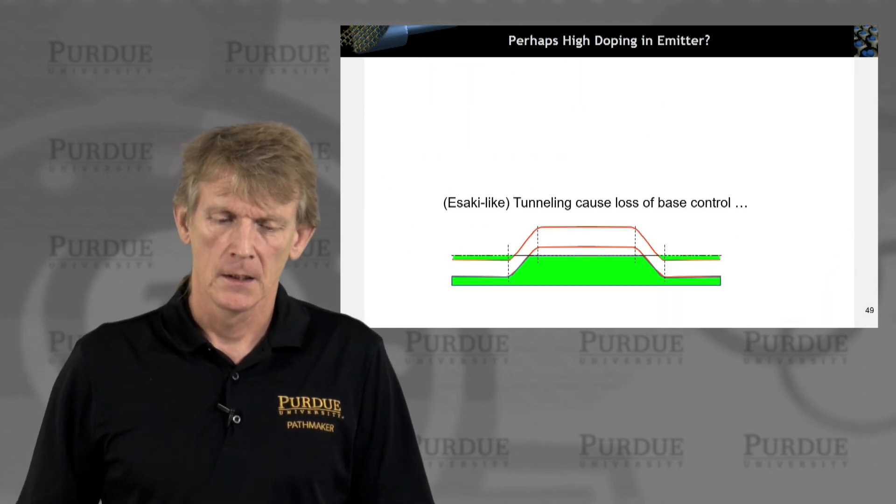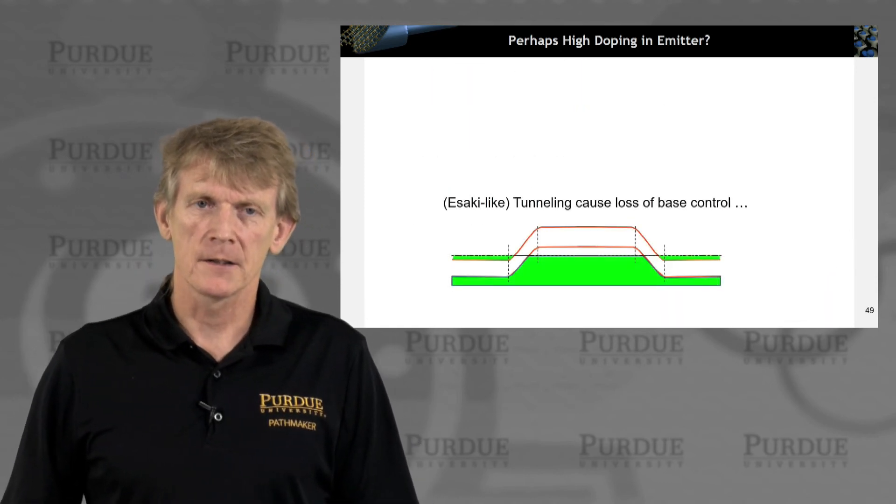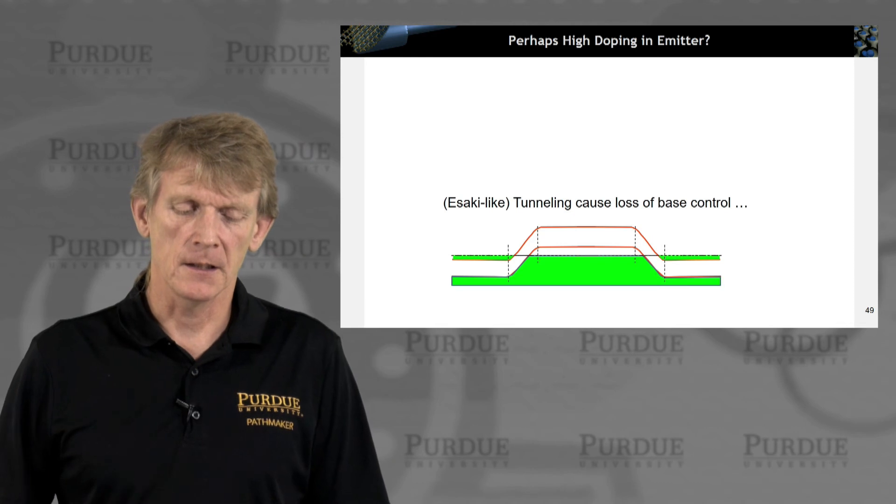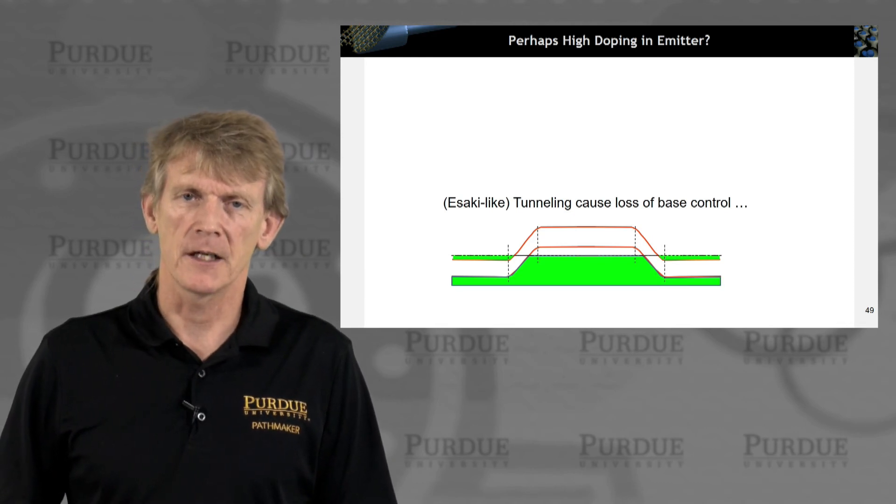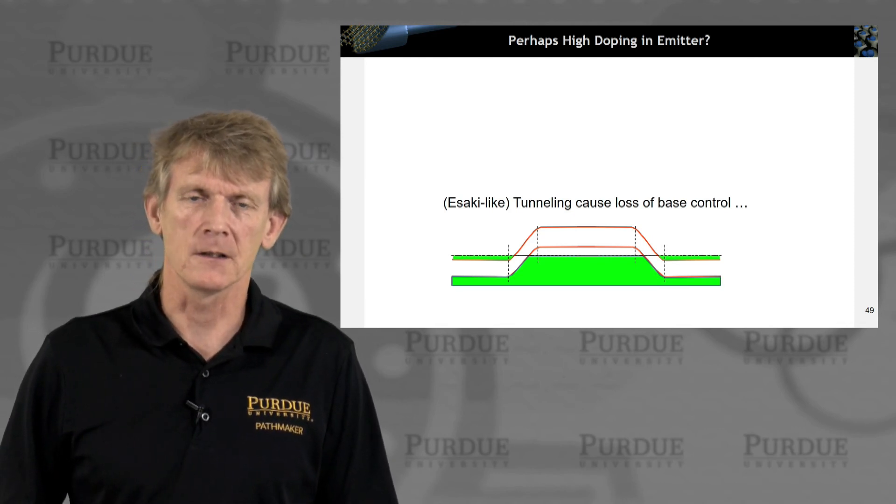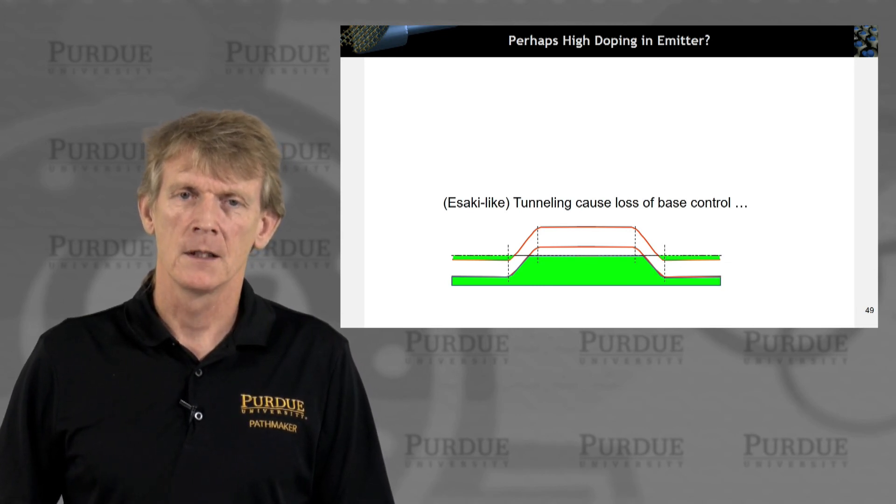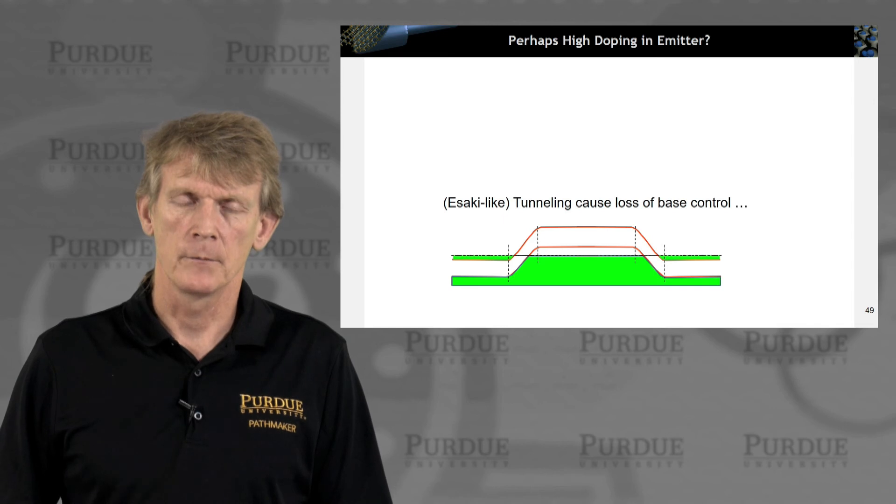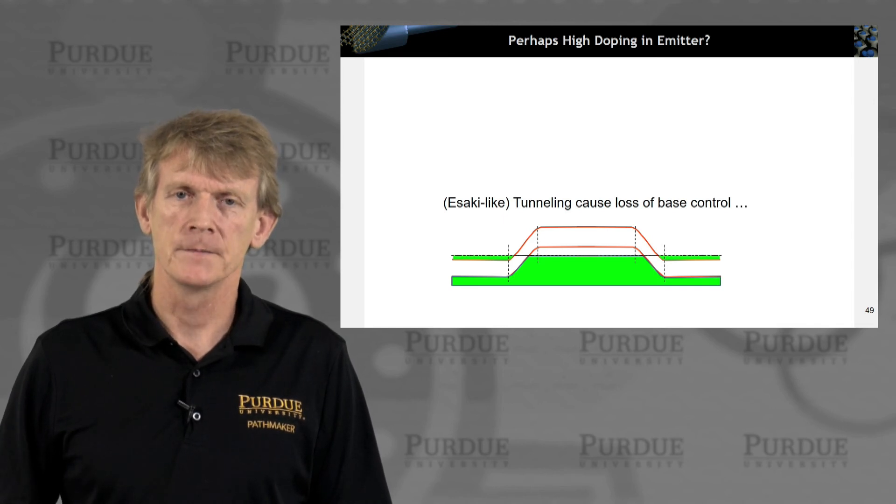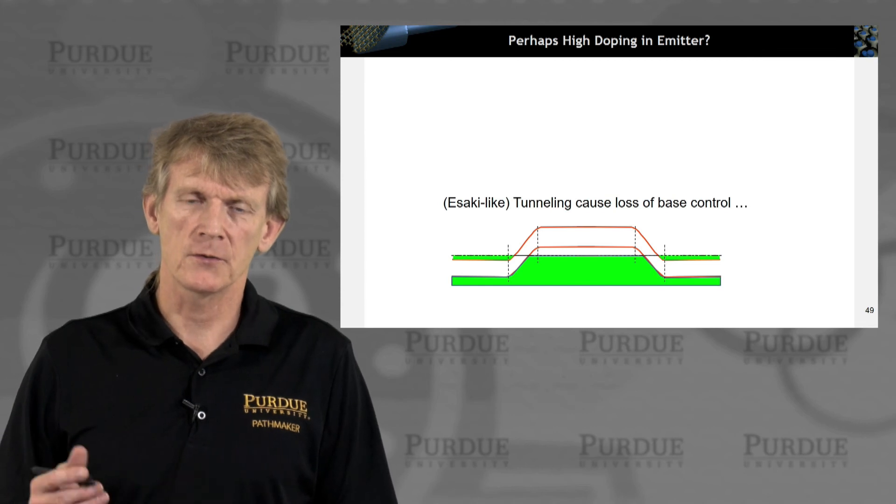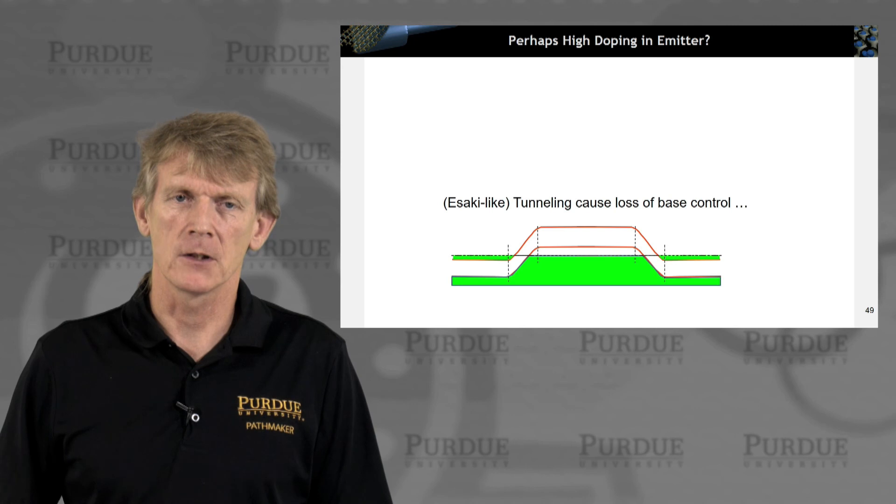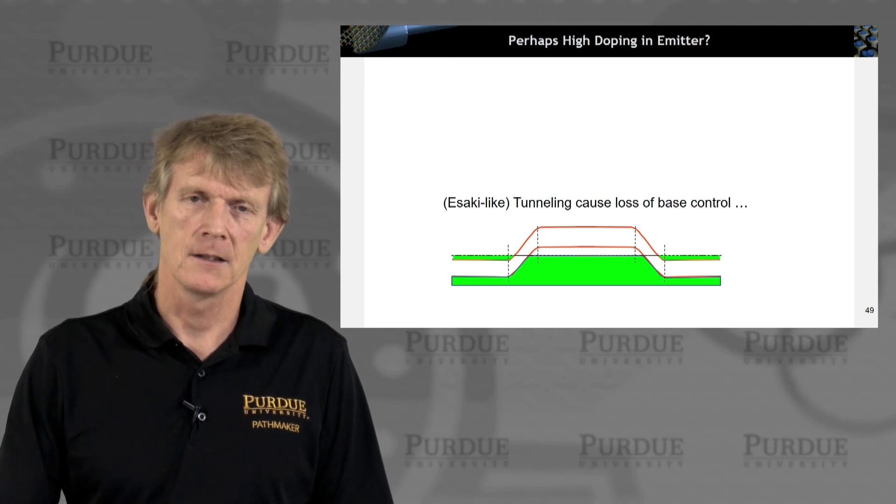How about really high doping? For example, here in an Esaki-like fashion where you dope degenerately, then you can have Esaki-like tunneling from base to emitter, and that's no good either. So going to extremely high doping to the extreme where you can have Esaki tunneling is no good either.